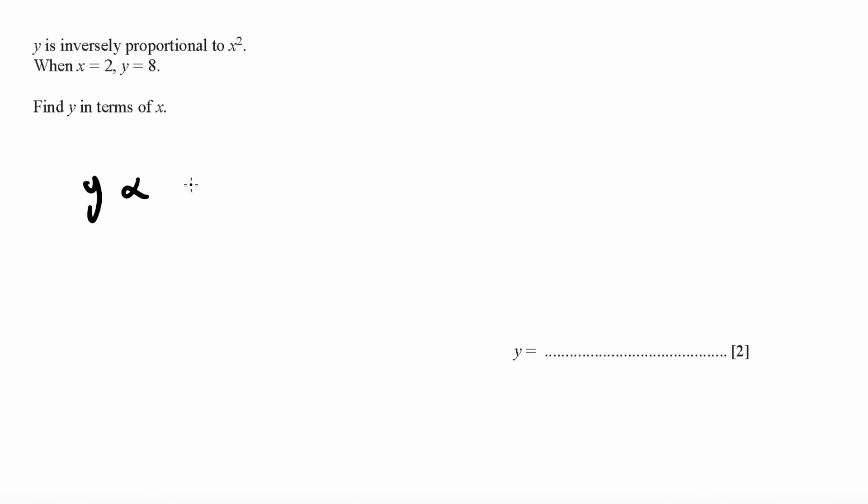For equations like this, y is inversely proportional to x squared. To get rid of the inverse, you do y equals k over x squared by introducing a constant. You have these values; you substitute them in, so k over 4. The value of k will be 32. Now to find y in terms of x, you simply just plug in the values, so y is going to be equals to 32 over x squared.